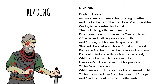Doubtful it stood, as two spent swimmers that do cling together and choke their art. The merciless Macdonwald, worthy to be a rebel, for to that the multiplying villainies of nature do swarm upon him, from the western isles of kerns and gallo-glasses is supplied. And fortune, on his damned quarrel smiling, showed like a rebel's whore. But all's too weak for brave Macbeth — well, he deserves that name. Disdaining fortune with his brandished steel, which smoked with bloody execution. Like valour's minion carved out his passage till he faced the slave, which ne'er shook hands, nor bade farewell to him, till he unseamed him from the nave to the chops, and fixed his head upon our battlements.